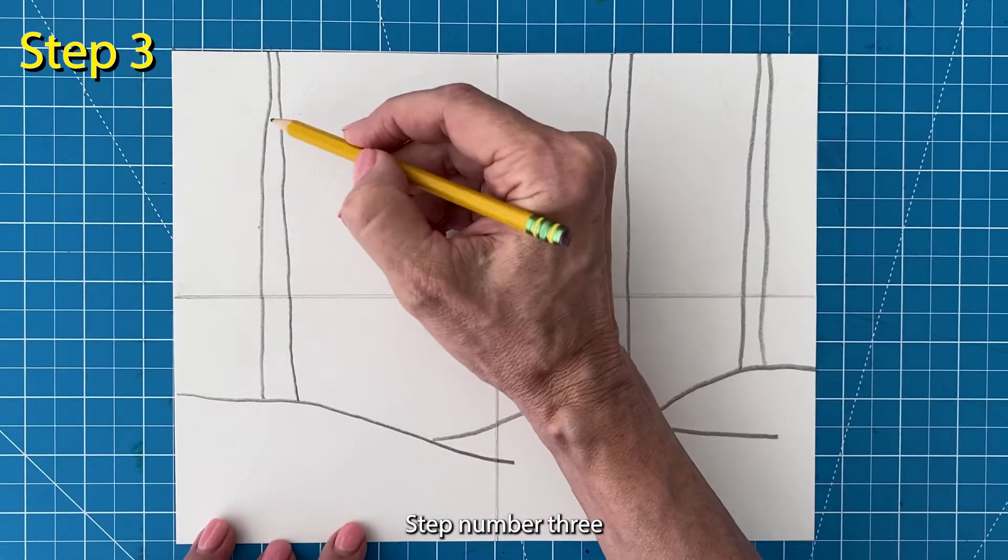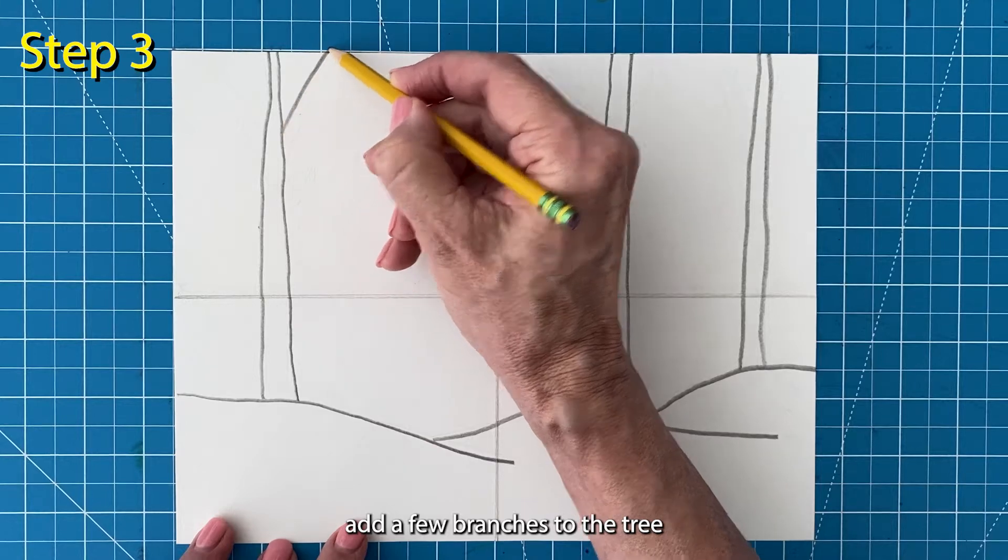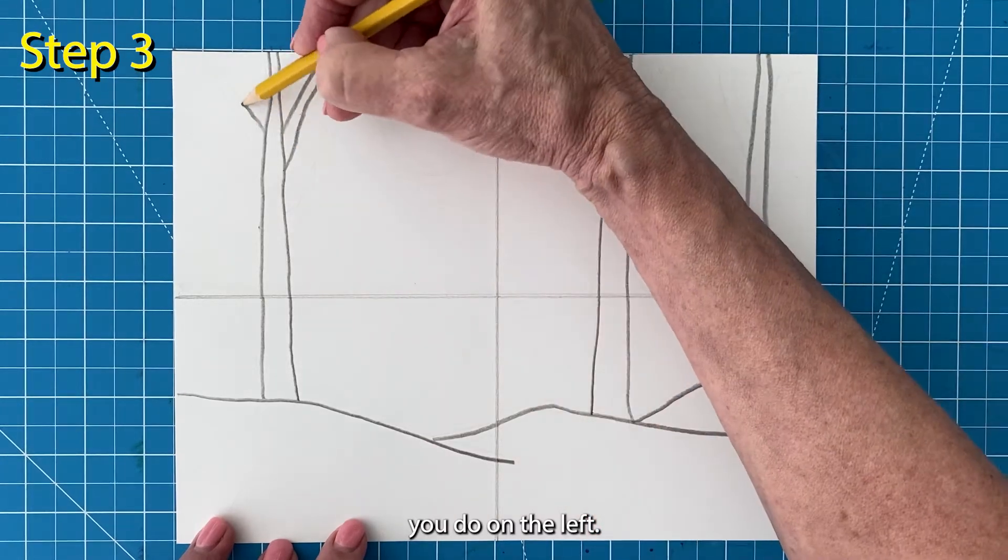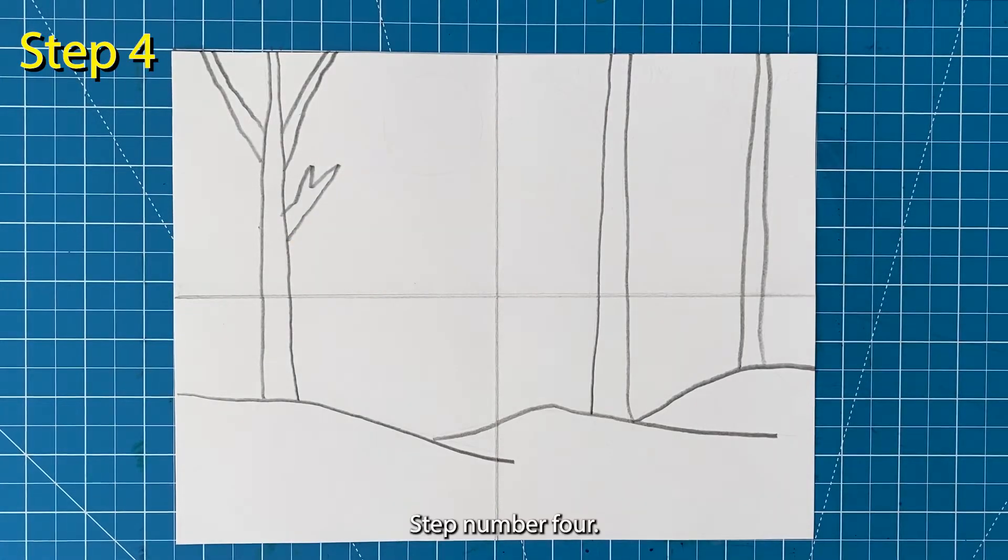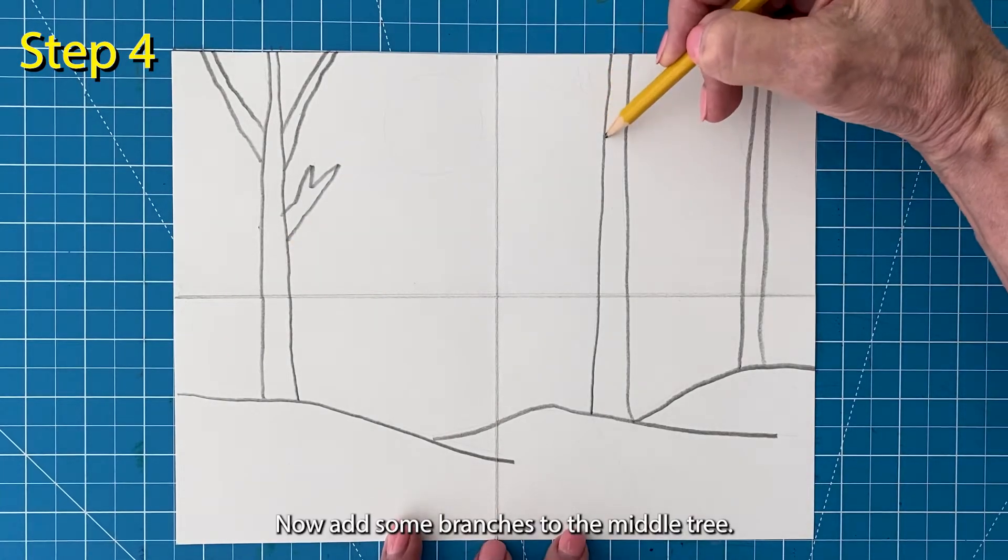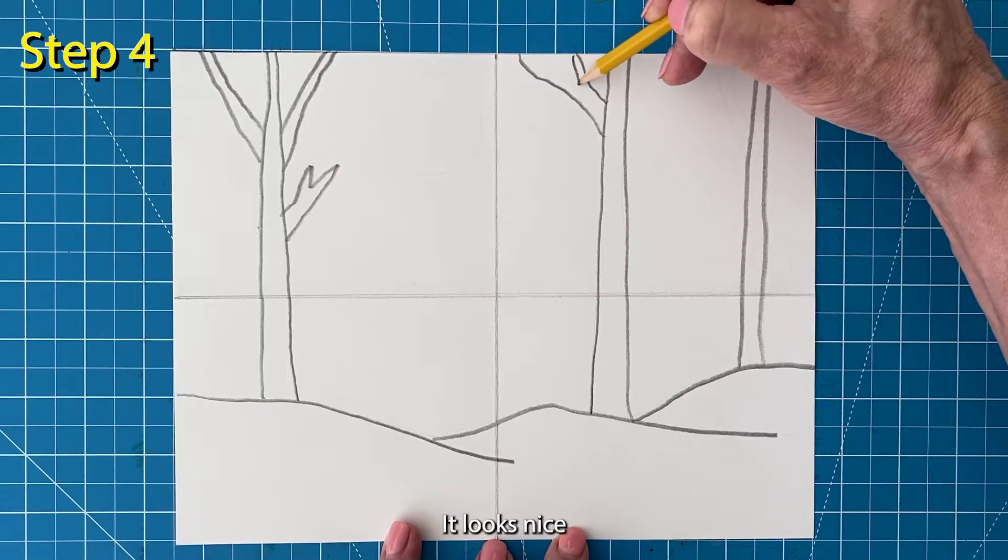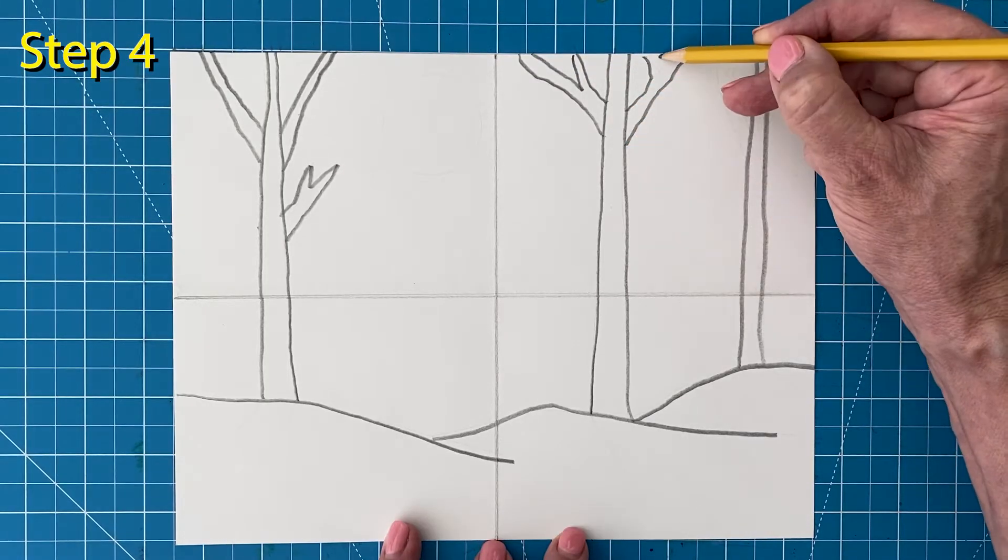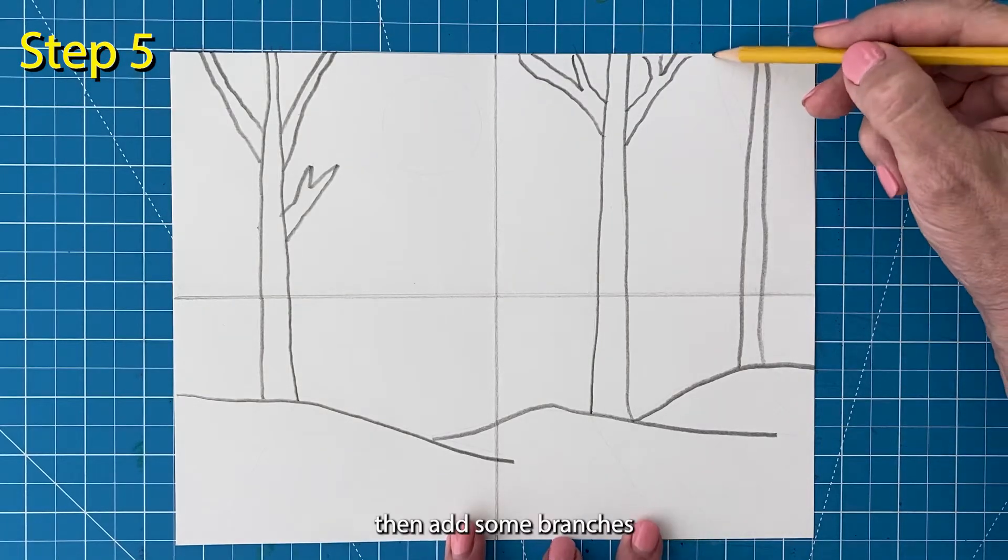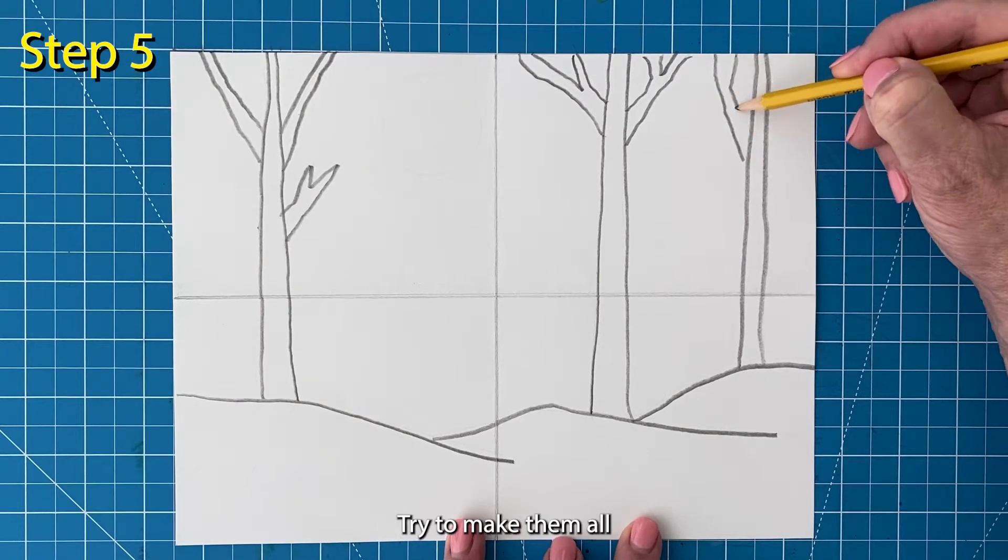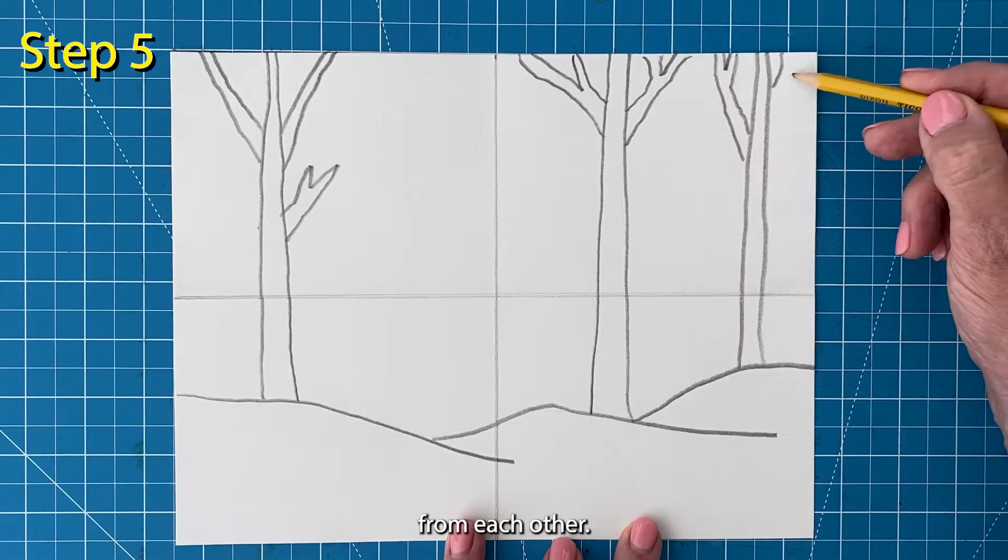Step number three. Add a few branches to the tree you drew on the left. Step number four. Now add some branches to the middle tree. It looks nice if some of them go off the page. Step number five. Then add some branches to the tree on the right. Try to make them all look a little bit different from each other.